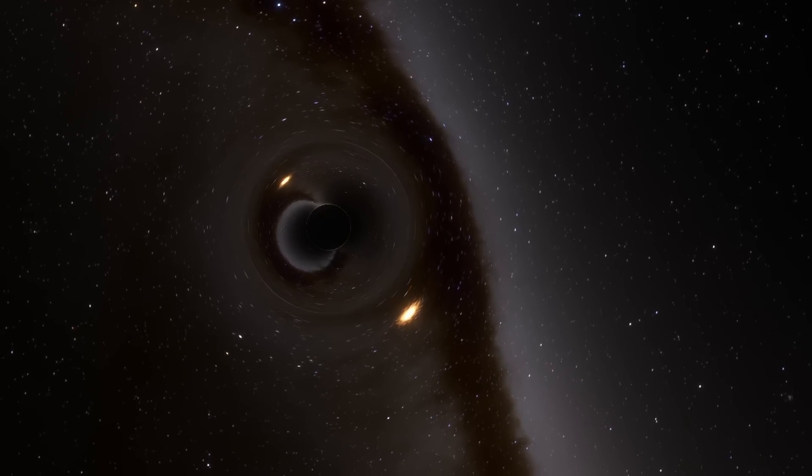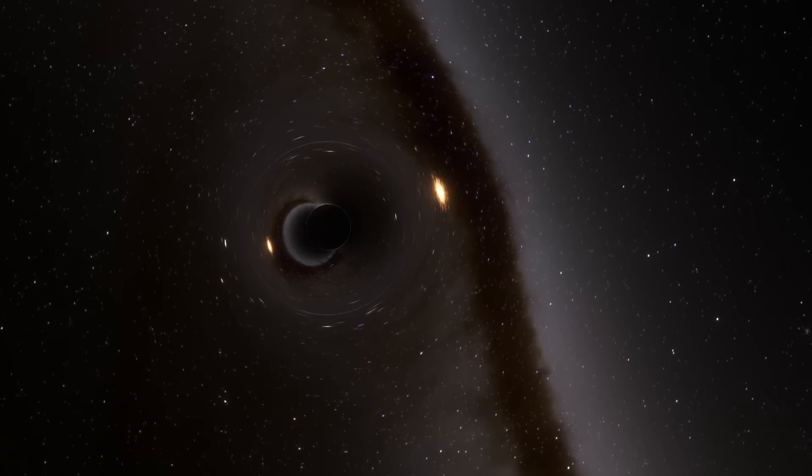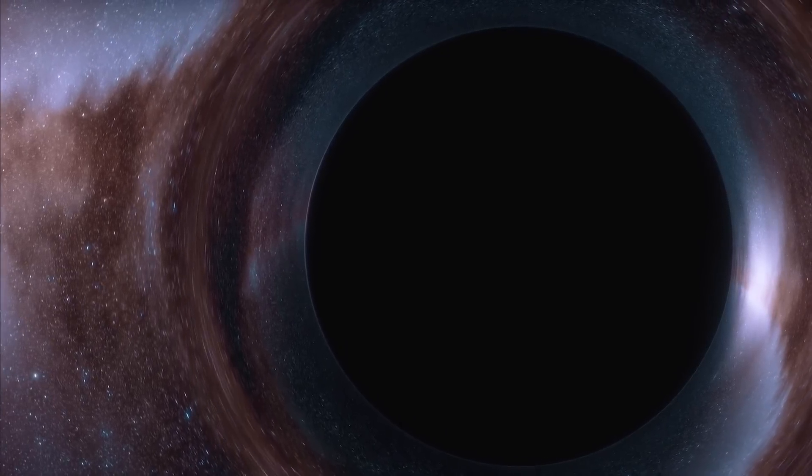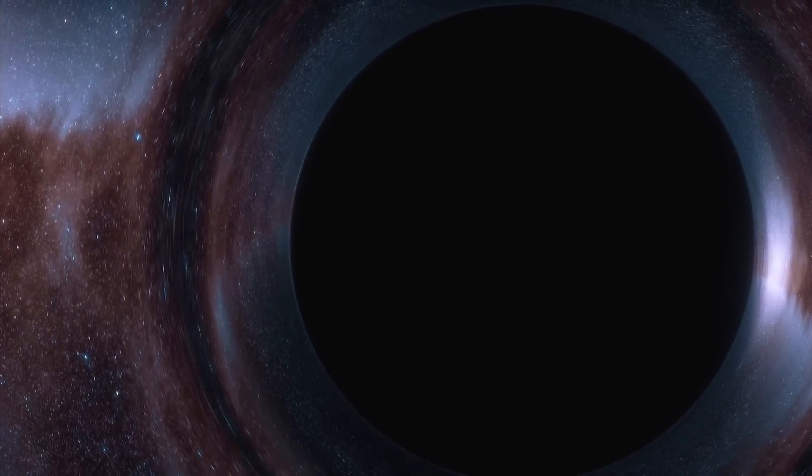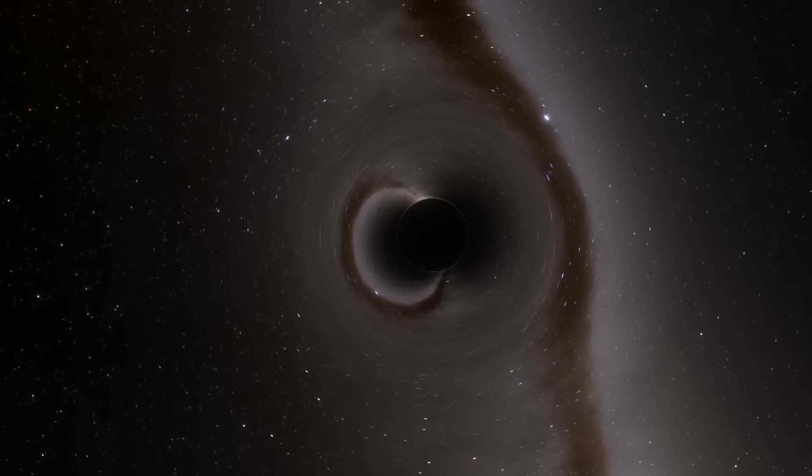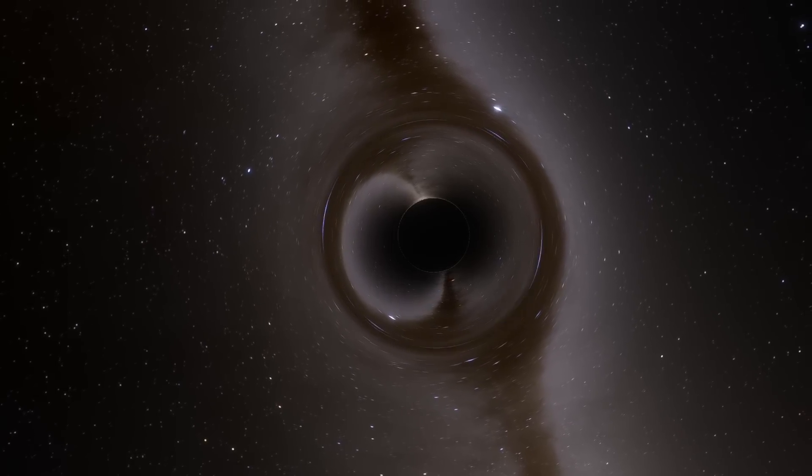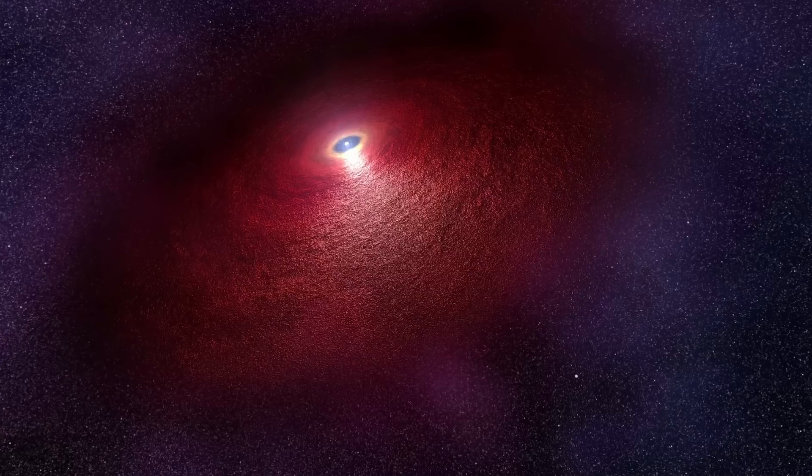Something that would be either the smallest black hole ever found or the most massive neutron star. Either way, this object would be much less massive than anything else discovered using gravitational waves, at least in terms of the least massive black holes, which obviously creates a few questions about what exactly this object is.